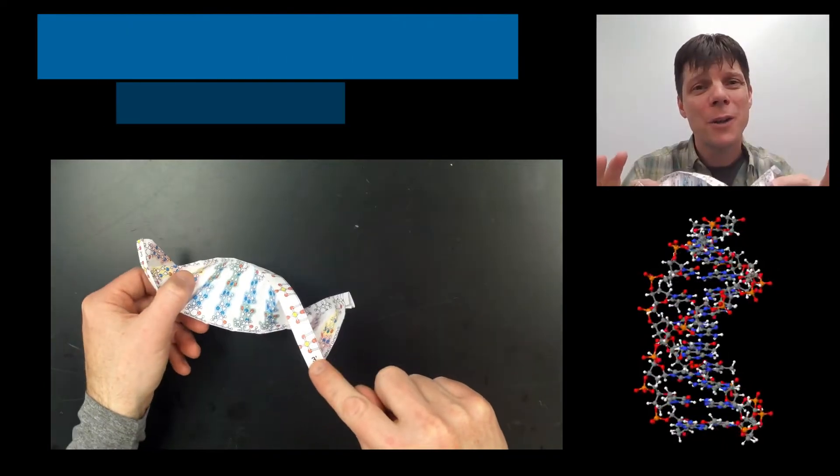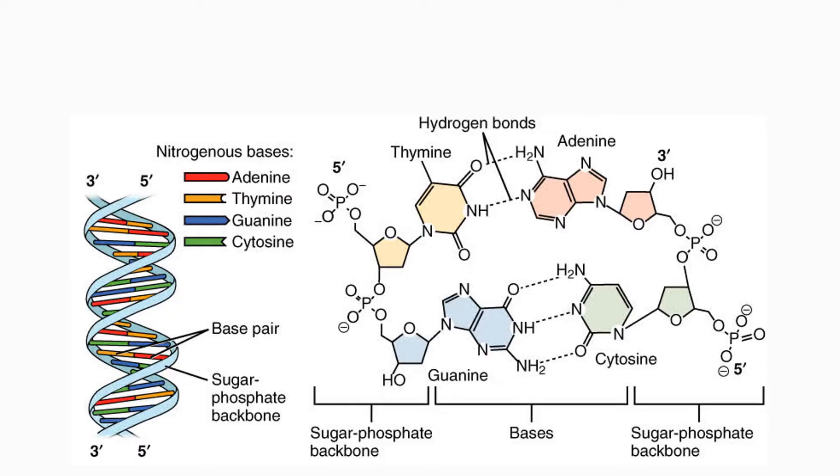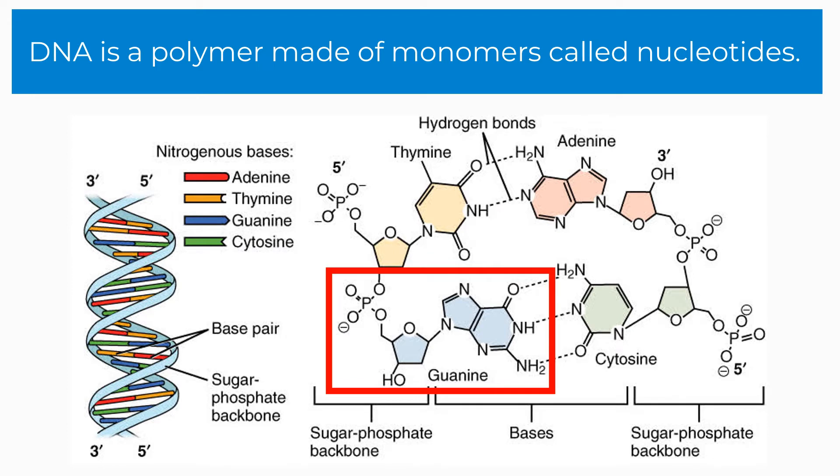Now that we've finished folding our model, let's review some important information about the structure of DNA. DNA is a polymer. Polymers are large molecules made of many smaller building block molecules called monomers that have been joined together to form a larger structure. The monomers that make up DNA are called nucleotides.